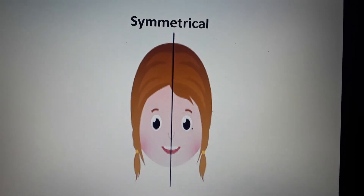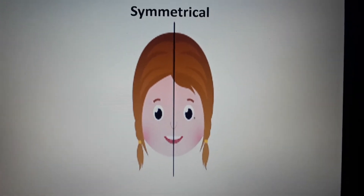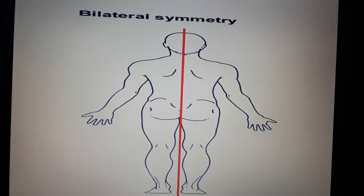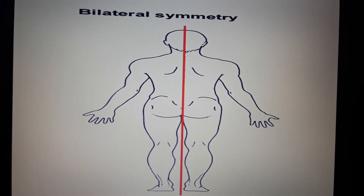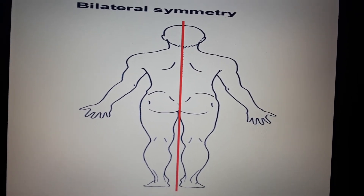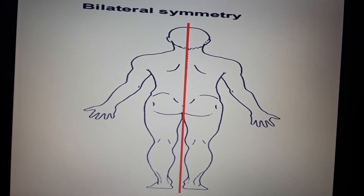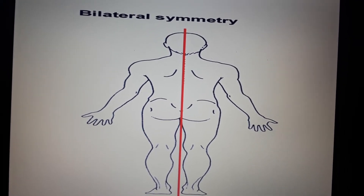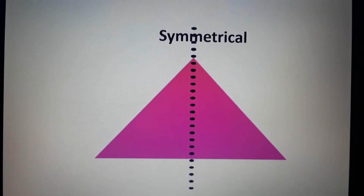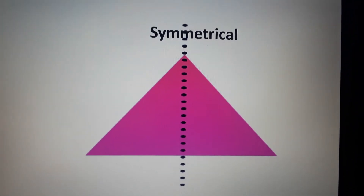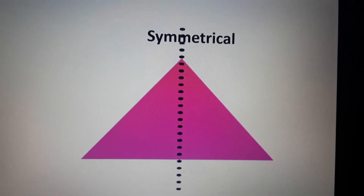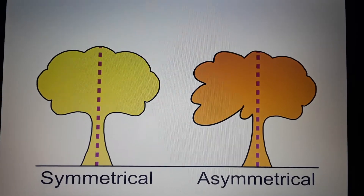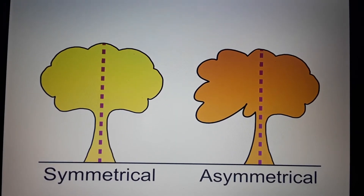Look at the face — the face is symmetrical. The right side and the left side both look exactly the same. Look at the human body — the human body is symmetrical. The right side and the left side are equal, they look the same. Look at the triangle — the triangle is symmetrical, both sides look the same.